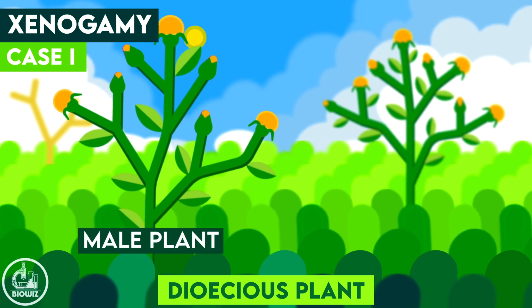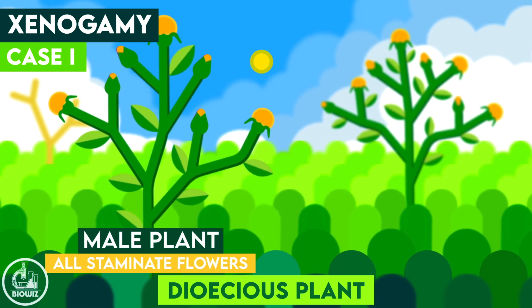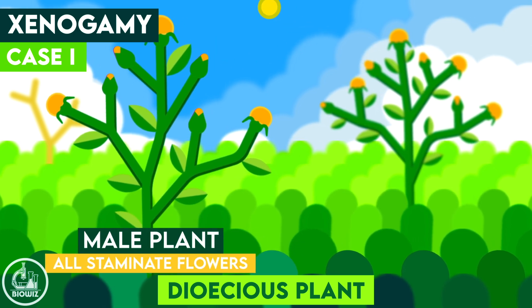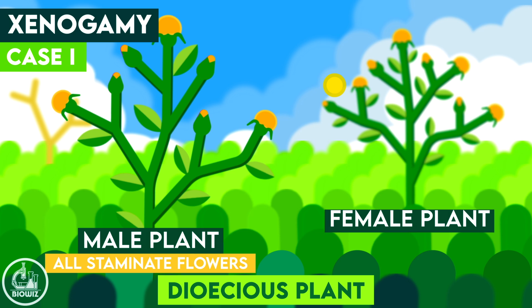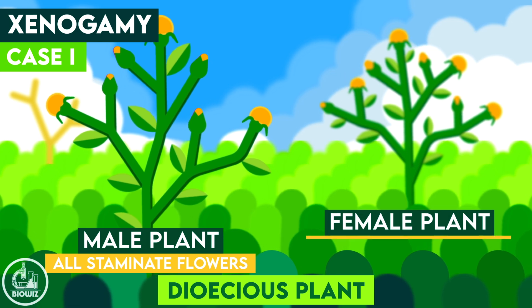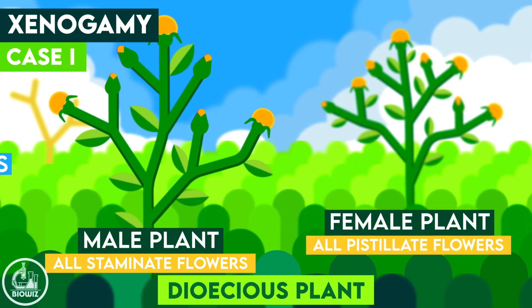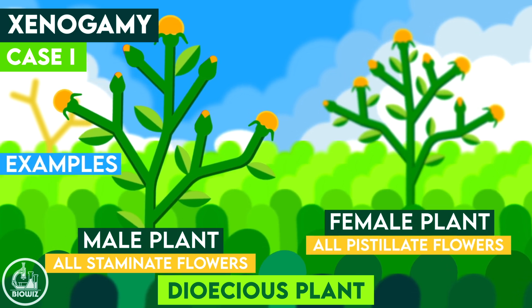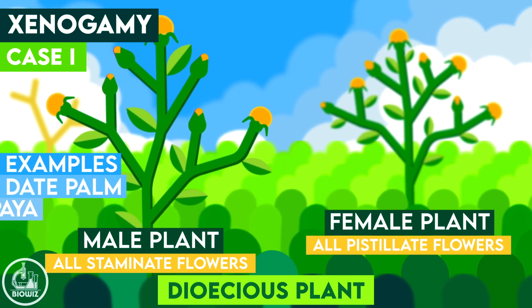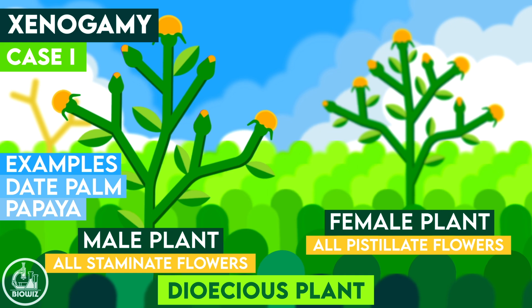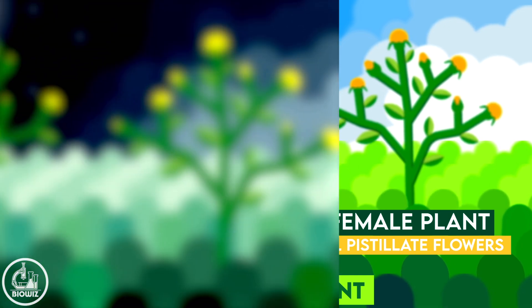The pollen will be carried from the male plant, which has only male or staminate flowers, to the female plant having only female or pistillate flowers. Common examples of such plants are date palm and papaya.